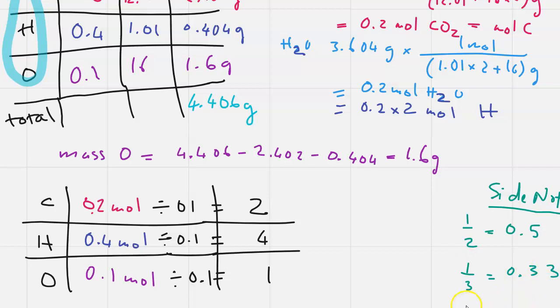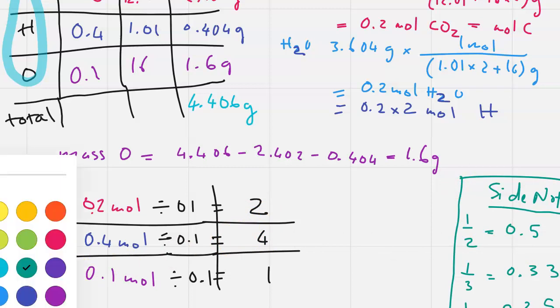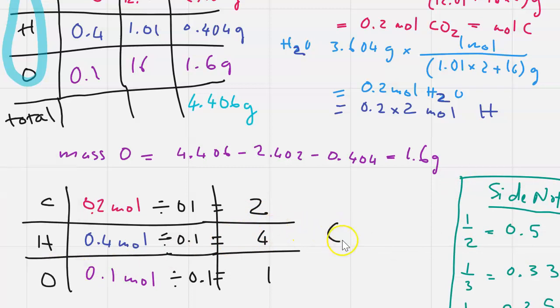And if you get something that is 0.25, close to 0.25, you will multiply by 4. That's just the way fractions work. If you have a whole number like this, then hooray, we're done here. So carbon we have 2, hydrogen 4, and oxygen 1. This is your final answer.